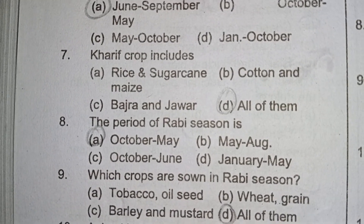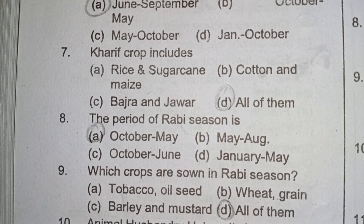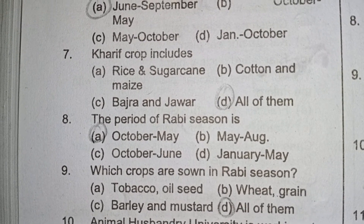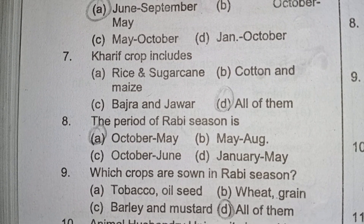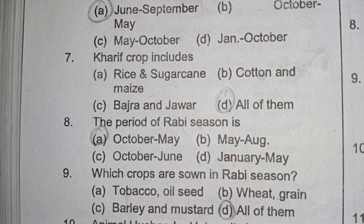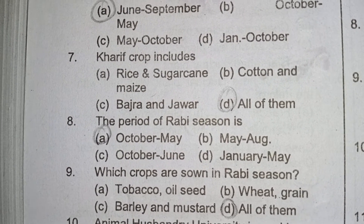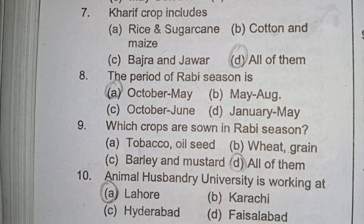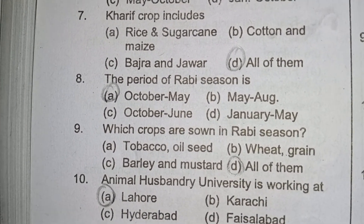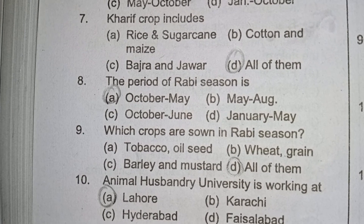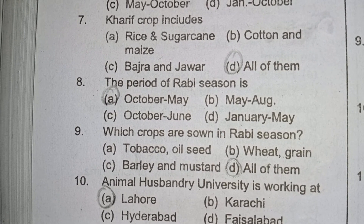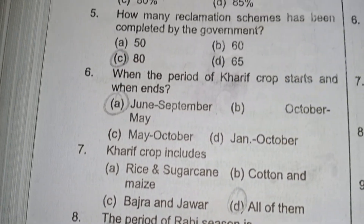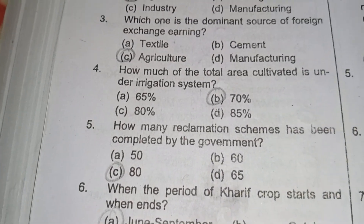Ninth question: which crops are sown in the Rabi season? All of them — option A is tobacco and oilseed, option B is wheat and grain, option C is barley and mustard. All are correct options. The tenth answer: the Animal Husbandry University is working in Lahore.